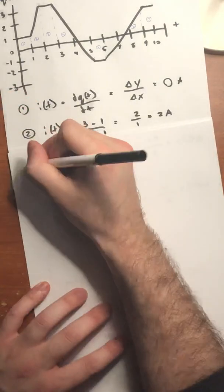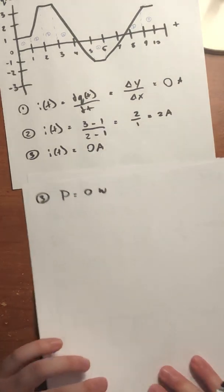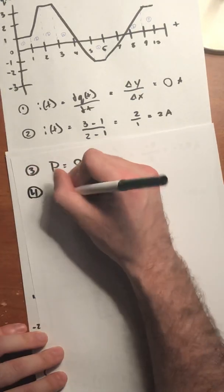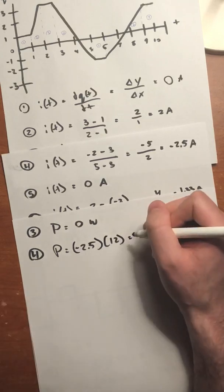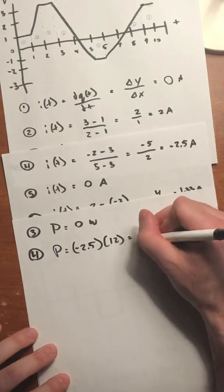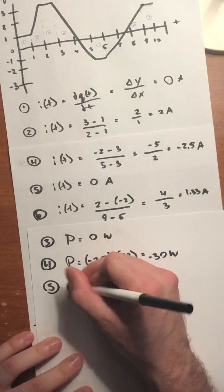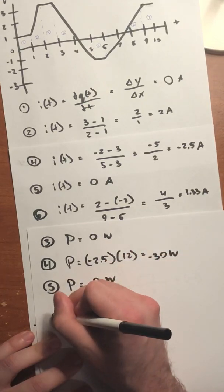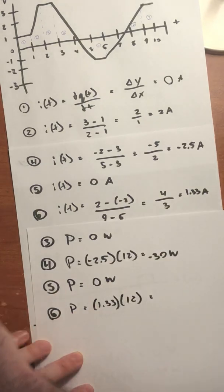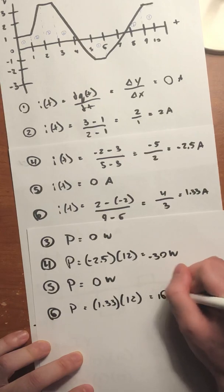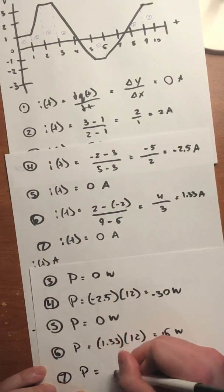For section 3: again 0 watts, since no current is flowing. For section 4: negative 2.5 amps times 12 volts gives negative 30 watts. For section 5: 0 amps means 0 watts. For section 6: 1.33 amps times 12 volts gives approximately 16 watts. For section 7: 0 current means 0 watts.